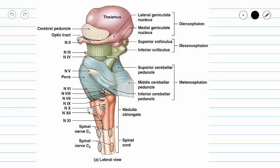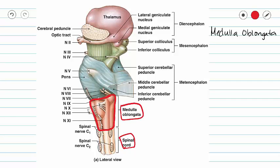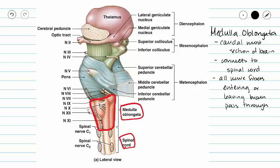These next couple of videos in our brain series are going to cover the basic structure and function of the brain stem. This video is going to begin with the medulla oblongata. The medulla oblongata is the caudal-most section of our brain stem and it connects directly to the spinal cord. It is the lowest portion of our brain, so all nerve fibers entering or leaving our brain from our spinal cord are going to pass through the medulla oblongata.